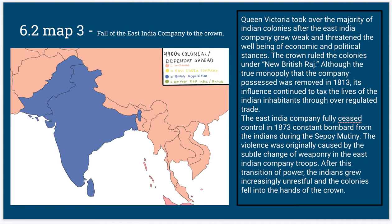In the 6.2 map, we can see how the crown eventually completely took over the Indian region. The East India Company fully seized control after a lot of Indian rebellions in 1873, and continued to lose control as Queen Victoria took over the majority of the Indian colonies.